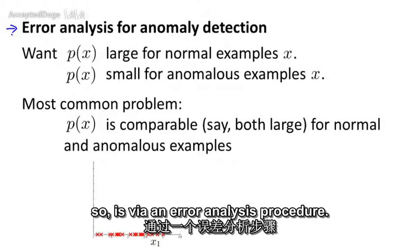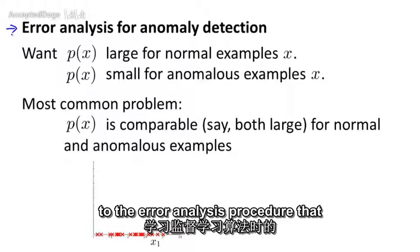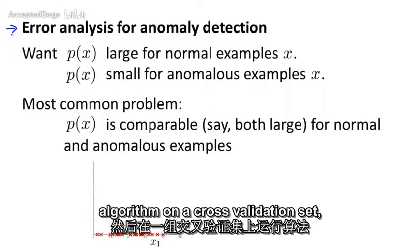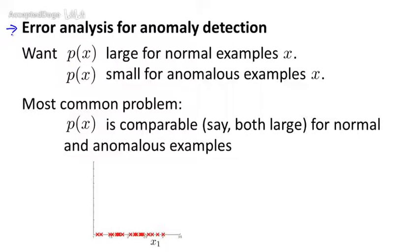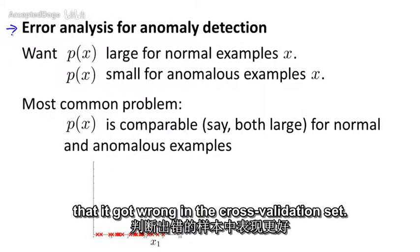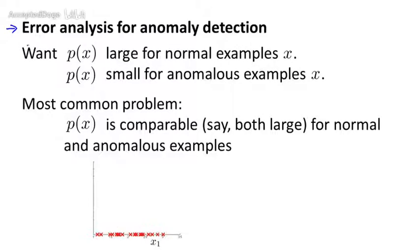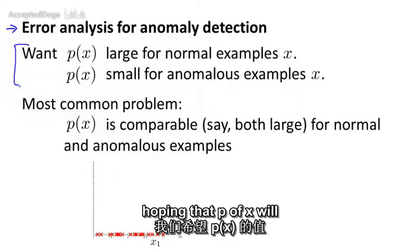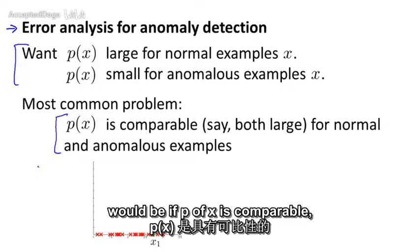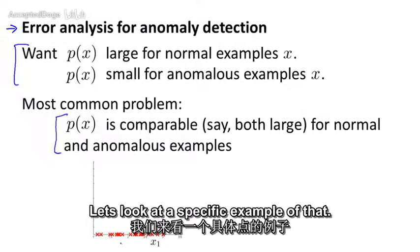The way I often come up with features is via an error analysis procedure — very similar to the error analysis procedure for supervised learning. We train a complete algorithm, run it on a cross-validation set, look at the examples it gets wrong, and see if we can come up with extra features to help the algorithm do better. In anomaly detection, we hope p(x) will be large for normal examples and small for anomalous examples. A common problem is if p(x) is comparably large for both normal and anomalous examples.